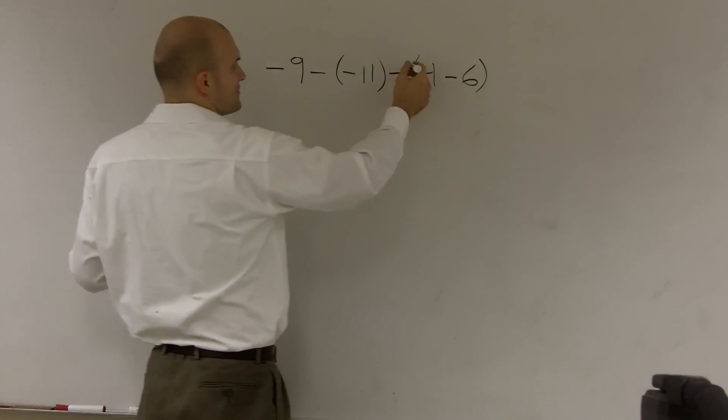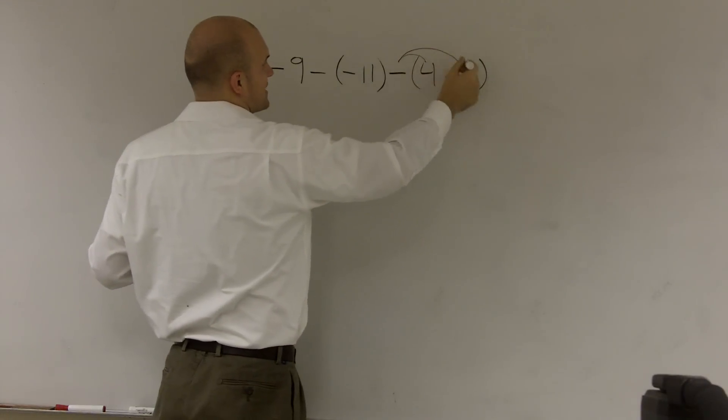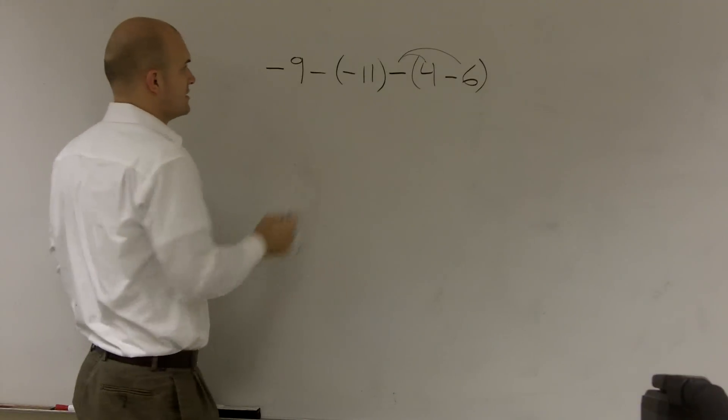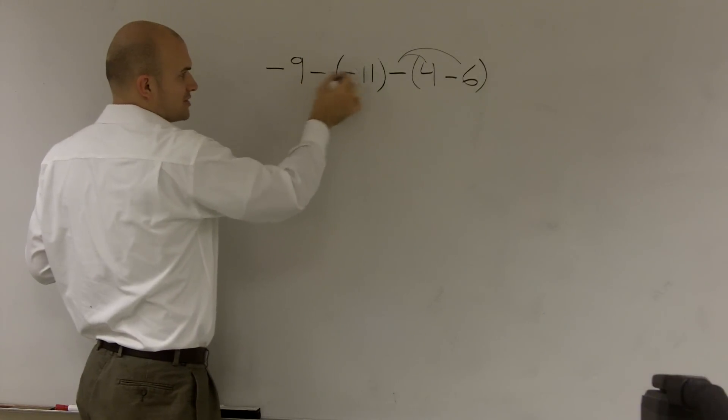In order to do that, I'm going to use my distributive property, which tells me I need to distribute this negative sign to both the negative 4 and the negative 6. So what I'm going to have, and I can distribute these too.